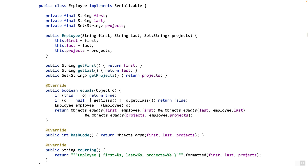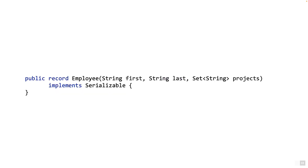Otherwise we would get some surprising results at runtime. Now with Java 16, all of this can be replaced by the following — a single Java record class. Isn't that nice? That's precisely when we use Java records: when we want to model immutable data.